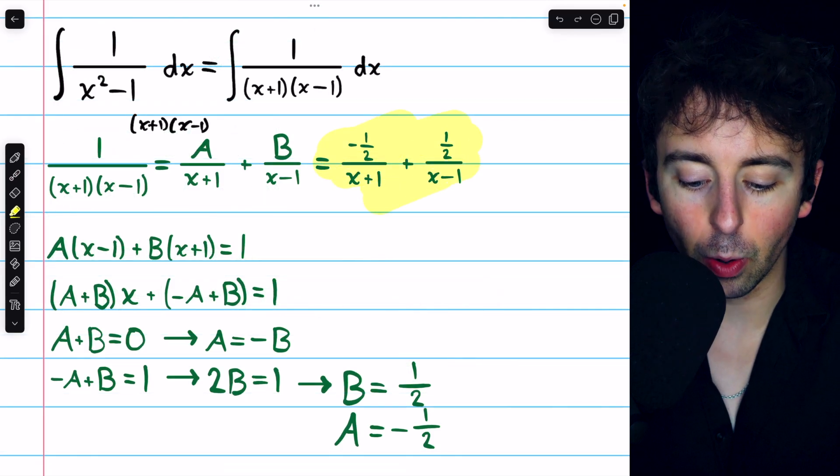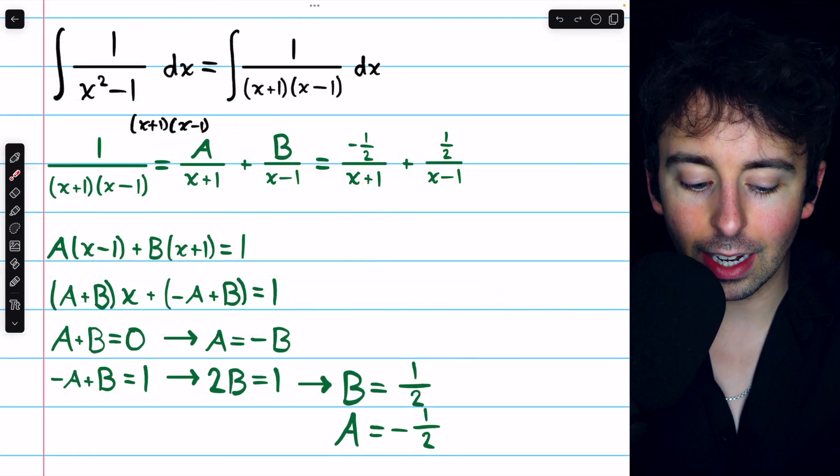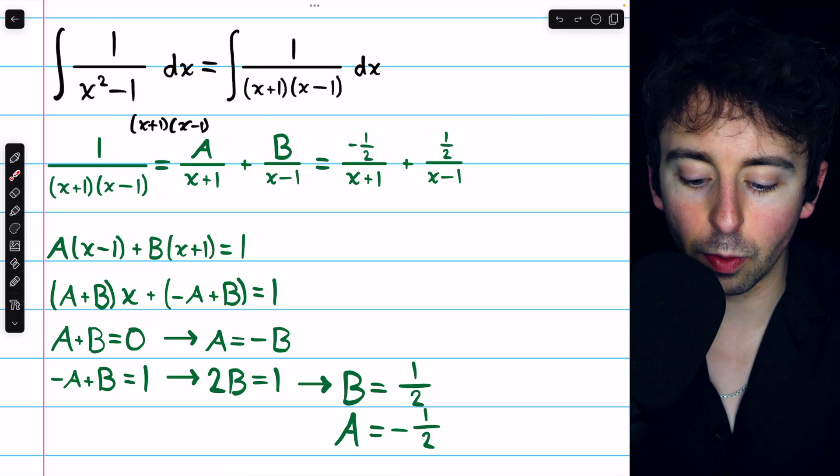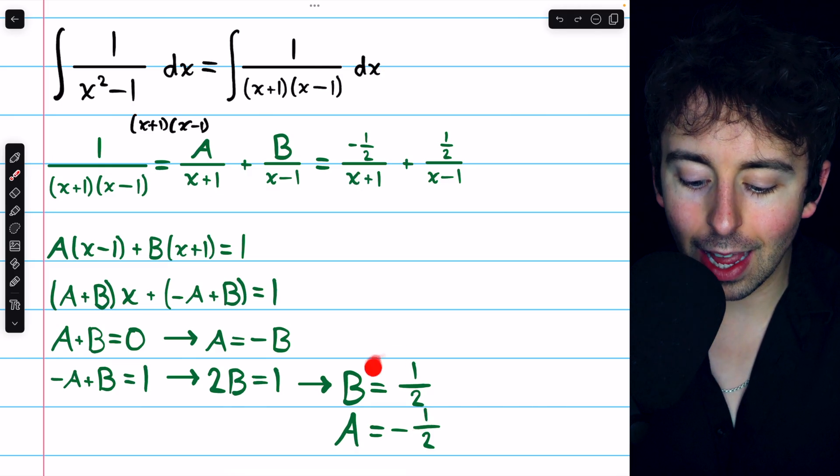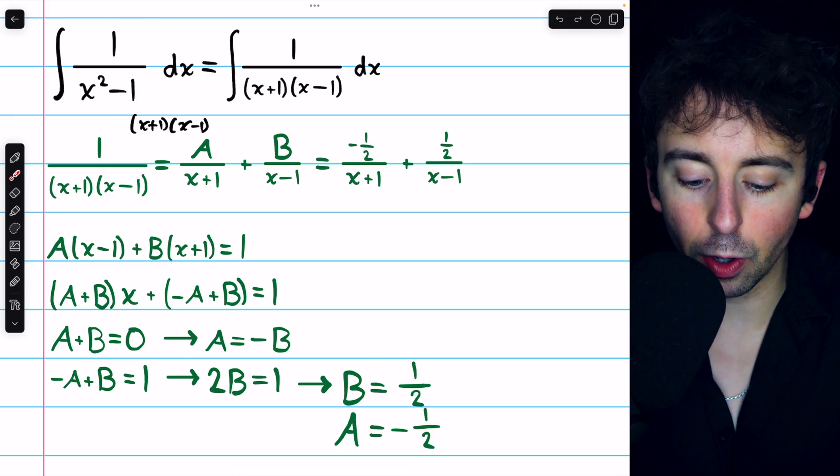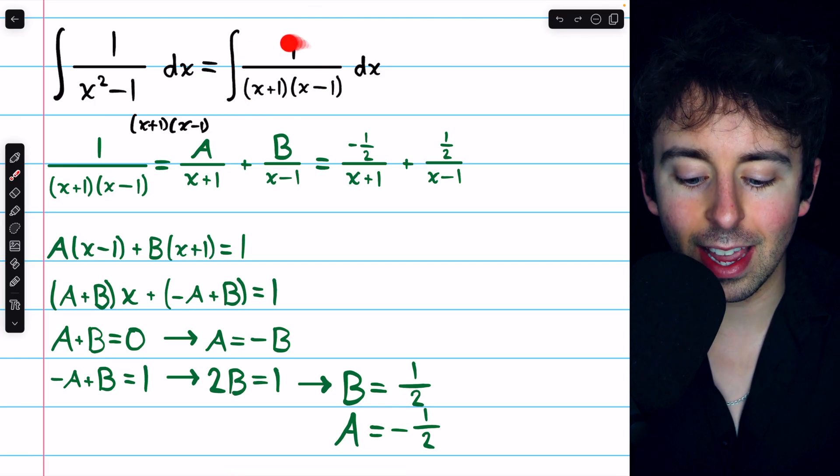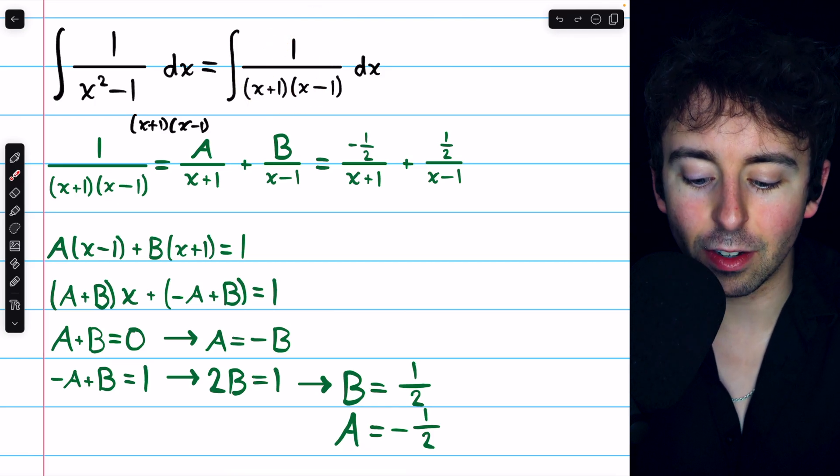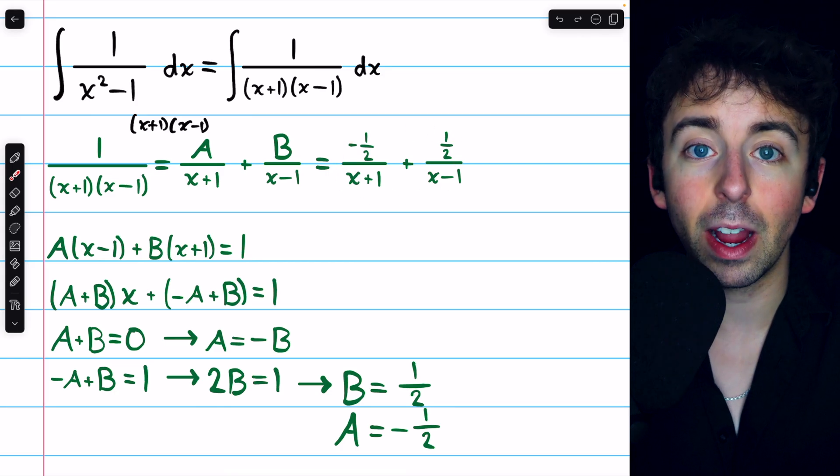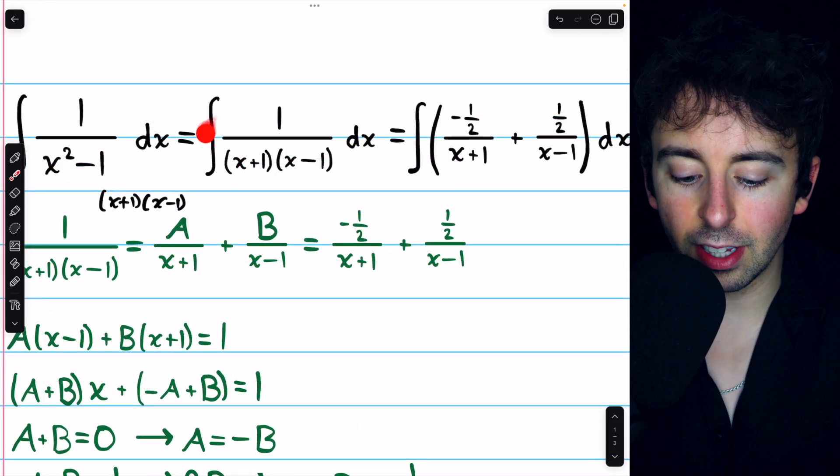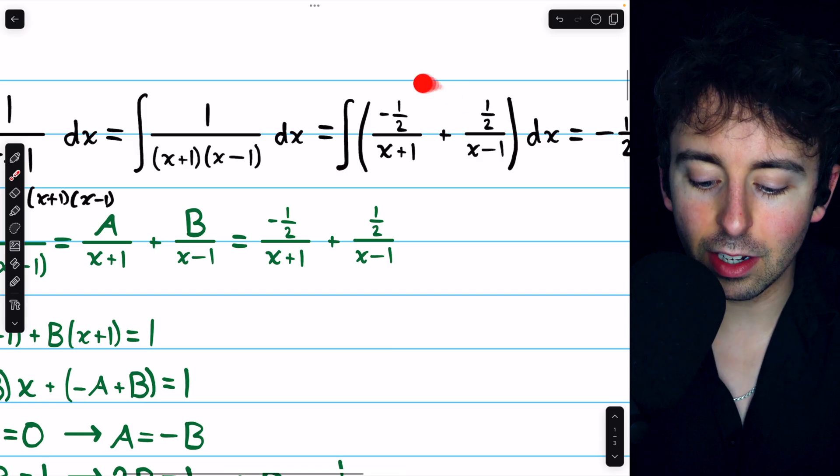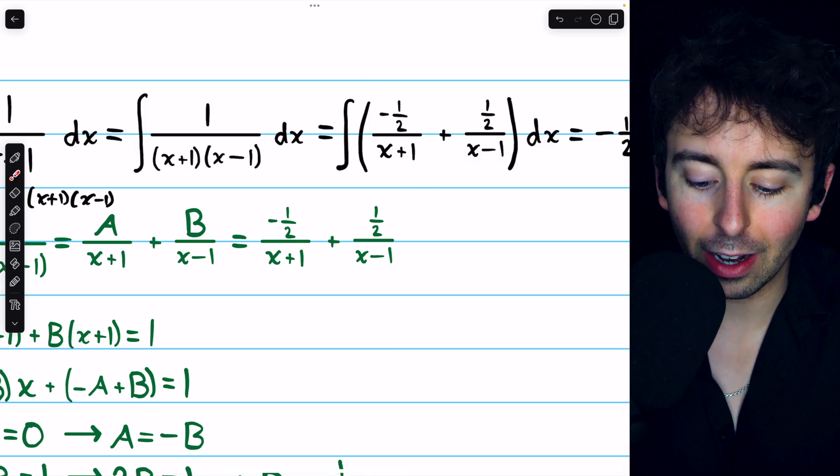We see how to decompose the fraction. It's negative one half over x plus one plus one half over x minus one. Trying to integrate this, well, that's the same as integrating this, which is very straightforward. Integrating this is the same as just integrating this sum of fractions.